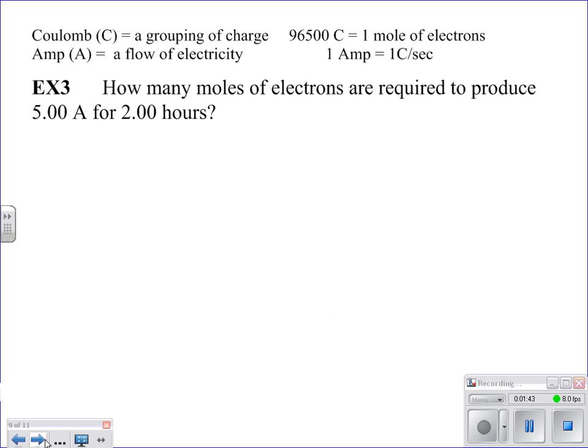Here's our first example. It says, how many moles of electrons are required to produce 5 amps for 2 hours? I don't want to use amps. I want to think of that in terms of coulombs per second. And I'm given two values here. I've got 5 coulombs per second, and I've got 2 hours. And the whole thing that I'm trying to figure out is how many moles of electrons. So I have two options. I can start with my coulombs per second, which is 2 units, or I can start with my 1 unit, which is just hours. So I'm going to choose to start with my 1 unit, because I'm not sure what to do with those 2 units yet. So I start with my 1 unit of 2 hours.